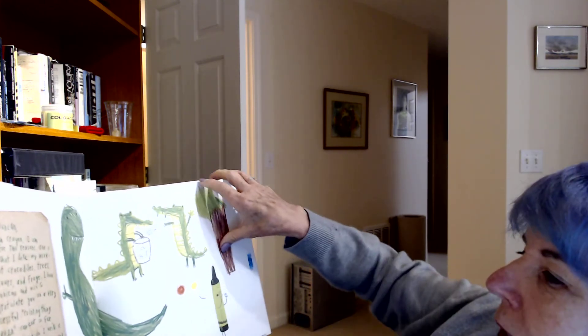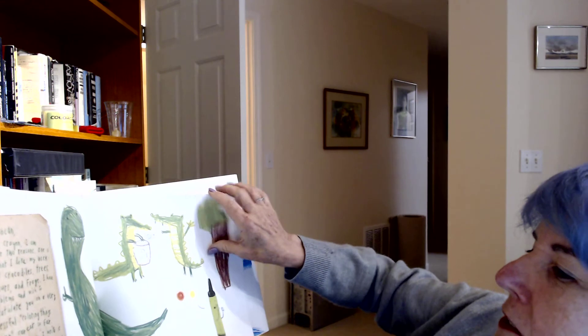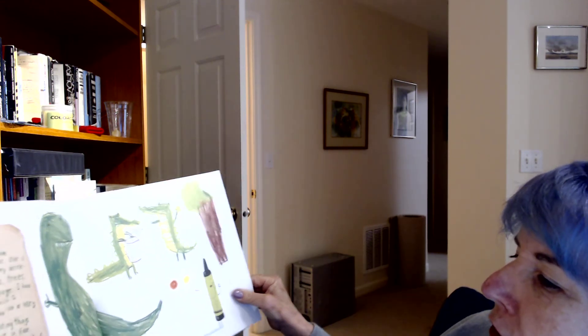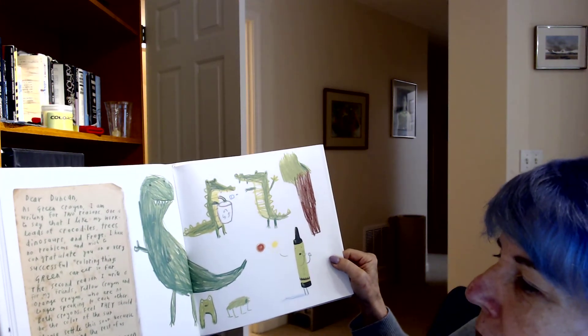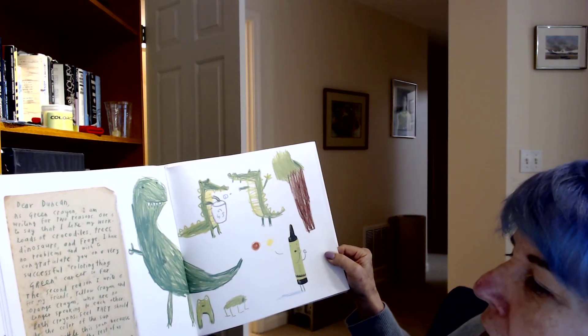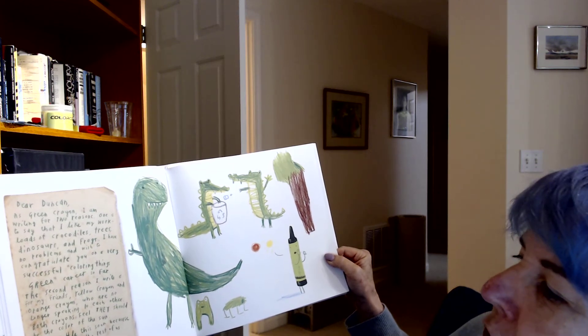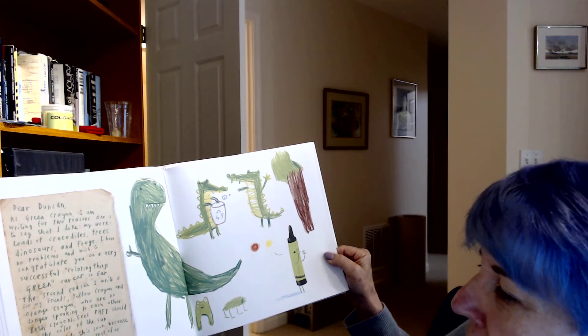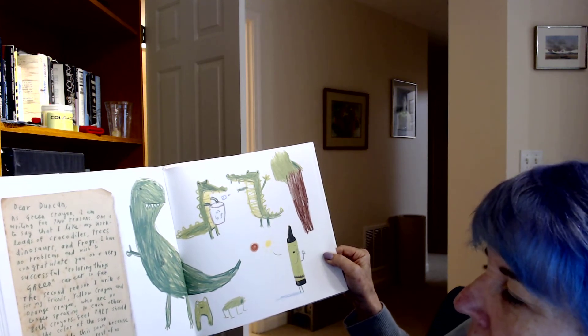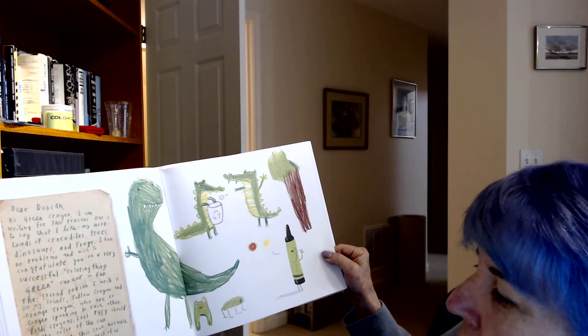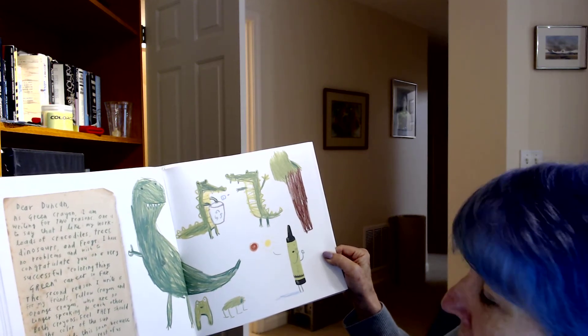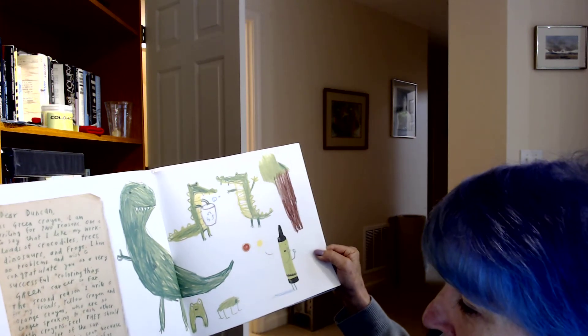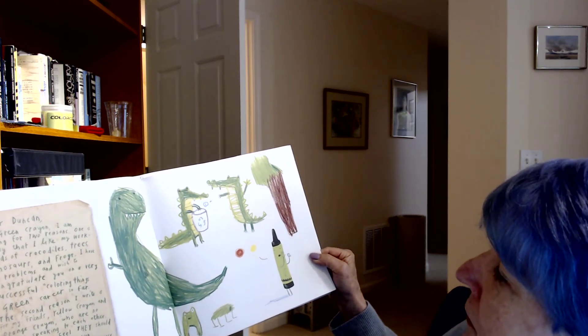Dear Duncan, as Green Crayon, I am writing for two reasons. One is to say that I like my work. Loads of crocodiles, trees, dinosaurs, and frogs. I have no problems and wish to congratulate you on a very successful coloring things green career so far. The second reason I write is for my friends, Yellow Crayon and Orange Crayon, who are no longer speaking to each other. Both crayons feel they should be the color of the sun. Please settle this soon because they're driving the rest of us crazy. Your happy friend, Green Crayon.